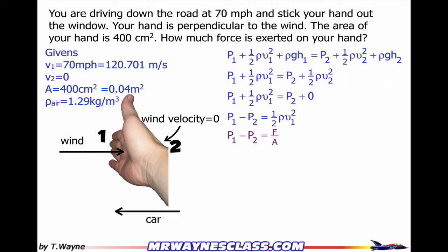So the area is just multiplied by that gauge pressure, and that equals the force. But I've got the equation for the gauge pressure to be one-half rho V1 squared. So I'm going to replace P1 minus P2 with one-half rho V1 squared.